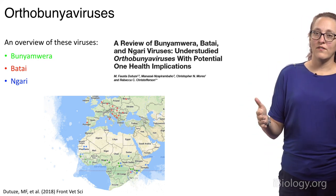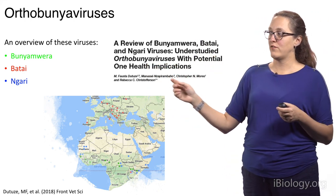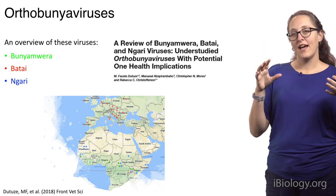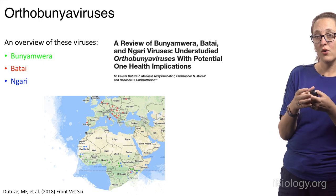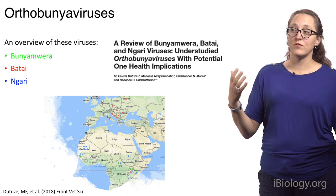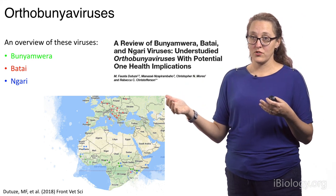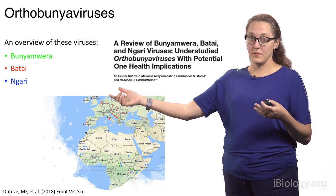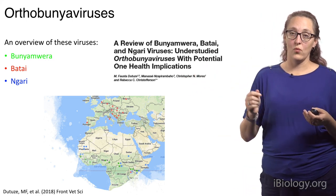The interesting thing about these three viruses in particular is that bunyamwera and batai are parental viruses for ngari. The genetic structure of bunyaviruses is that they have three discrete genome segments. When you have a co-infection of bunyamwera and batai, there is an opportunity for those segments to rearrange themselves. We have several examples of reassortments throughout the bunyavirus family, and ngari is the putative child of bunyamwera and batai — it shares two gene segments of bunyamwera and one of batai.